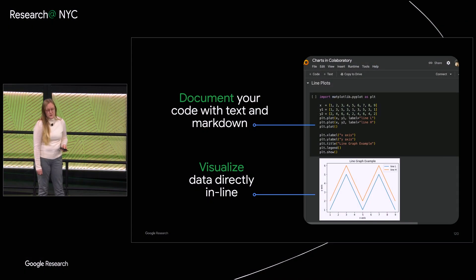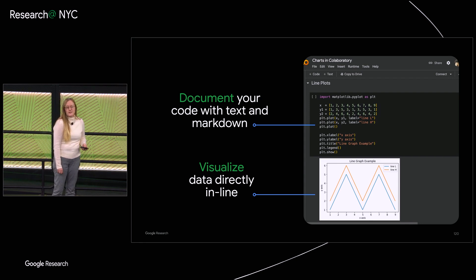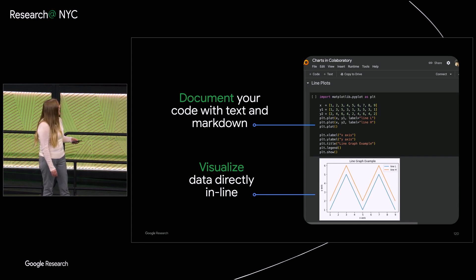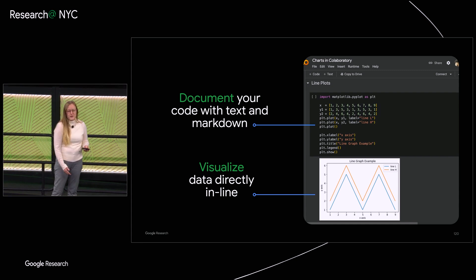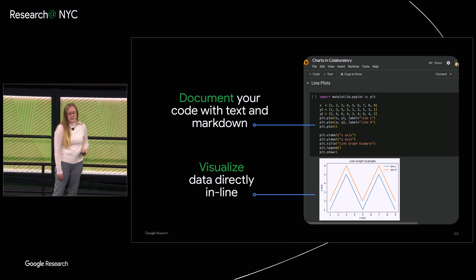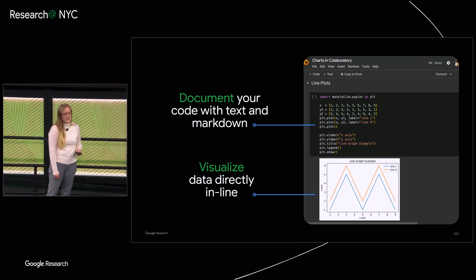Most importantly, Colab shows data visualizations inline. All code outputs are displayed right underneath the code. In the example shown here, it's just a matplotlib graph, but you can see by playing around with it that there are tons of rich outputs, like data frames, data tables, and all sorts of great stuff.